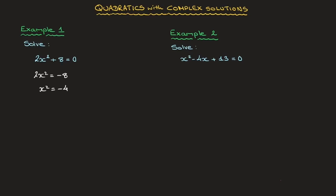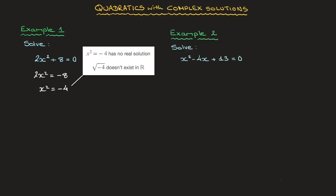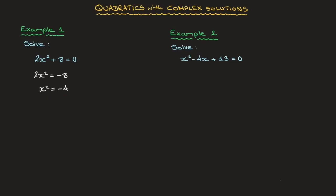Now at this stage, if we were working within the set of real numbers, we would stop here. Indeed, it's impossible to have a square number which is negative. But if we're working with complex numbers, we can carry on. We can now state that x is equal to plus or minus the square root of negative 4, which equals plus or minus the square root of 4 times negative 1.